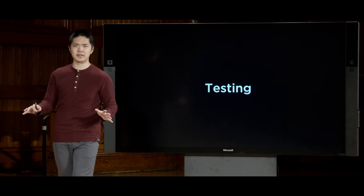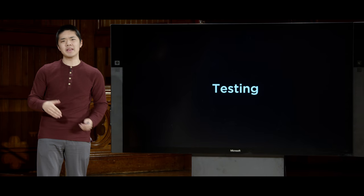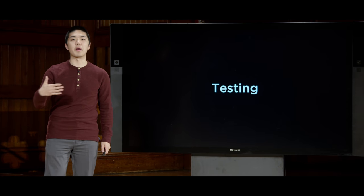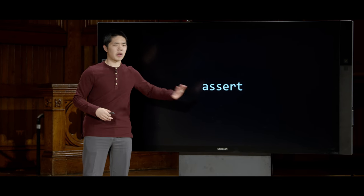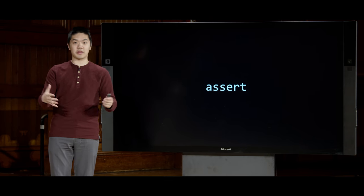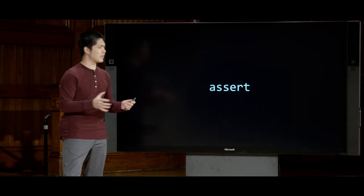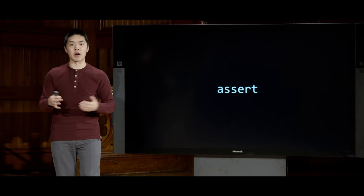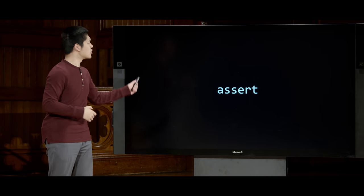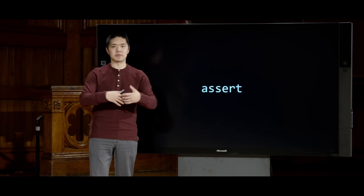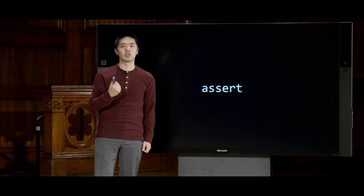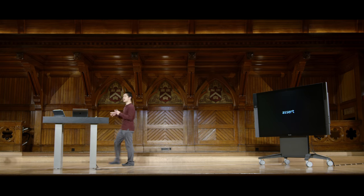We'll start simple and consider the basic way to take a Python function and test it. We can start with a command in Python known as assert. What assert does is it states that something should be true, and if that something is not true, then the assert throws an exception — some sort of error — so that whoever is running the program knows that something went wrong. This is a basic way to leverage Python's abilities to test a function.